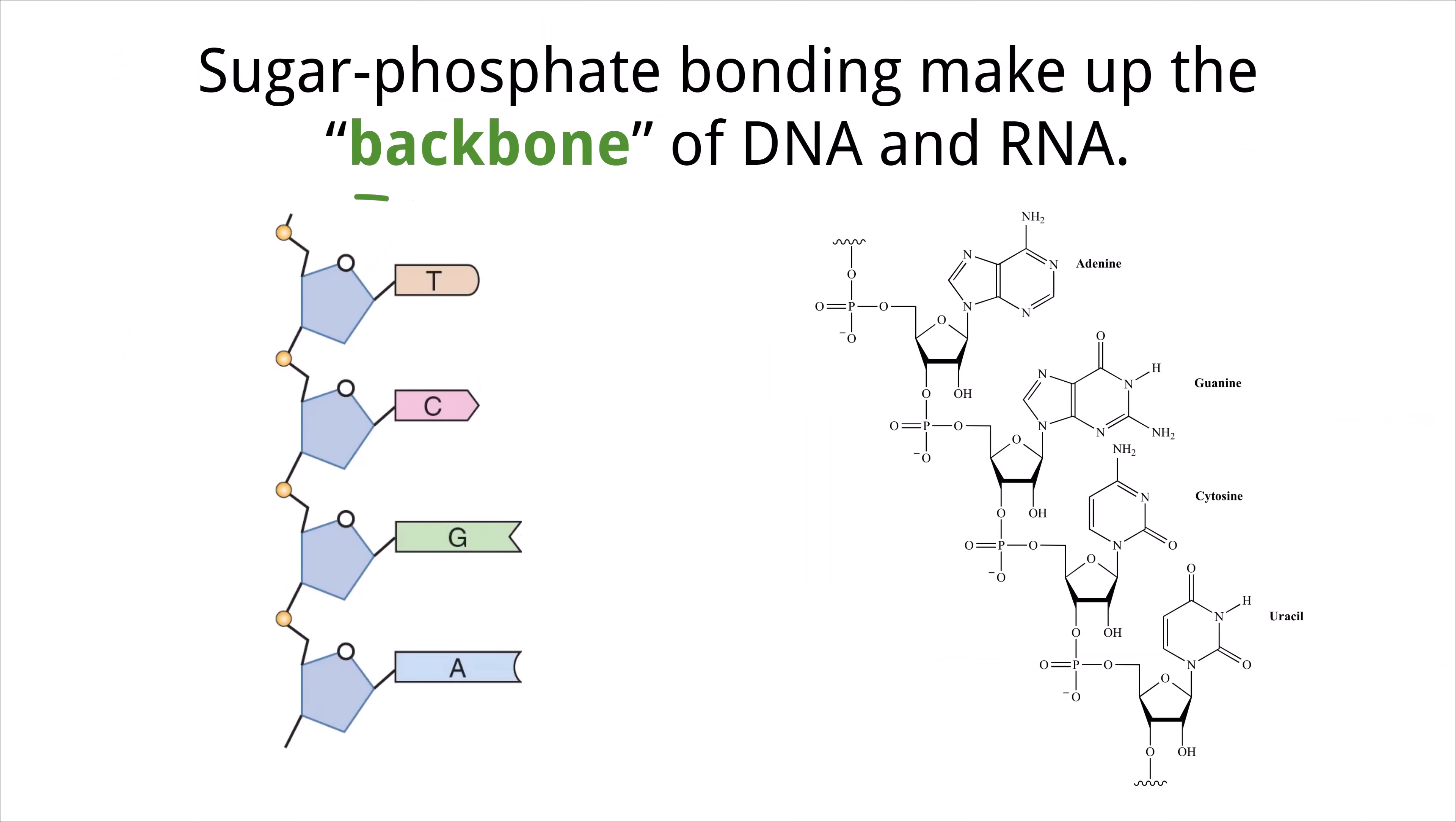We now know how to draw nucleotides, but when we look at structures like DNA and RNA, they are composed of many nucleotides bound together, not just one. In DNA and RNA, the phosphate of one nucleotide can chemically bond with the sugar of another. This forms a bond that holds them in place and creates what we call the backbone of these molecules.